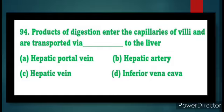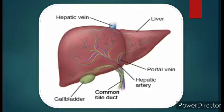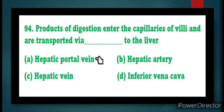Question number 94: Products of digestion enter the capillaries of villi and are transported by a dash to the liver. The liver has two blood supplies: one is the hepatic portal vein and another is the hepatic artery. The hepatic portal vein is a blood vessel that carries blood from the gastrointestinal tract, gallbladder, pancreas, and spleen to the liver. This blood contains nutrients and toxins extracted from the digested contents. The hepatic artery supplies oxygenated blood to the liver. The answer is option A, hepatic portal vein.